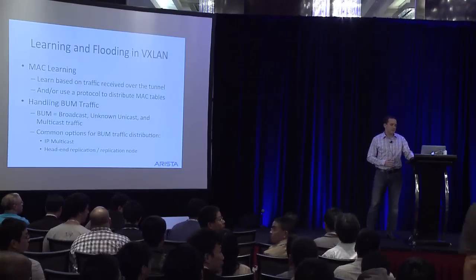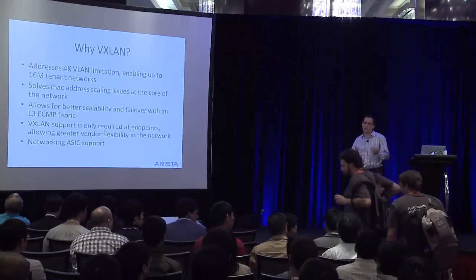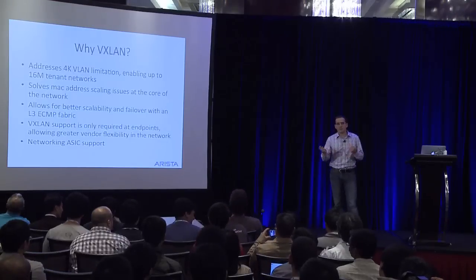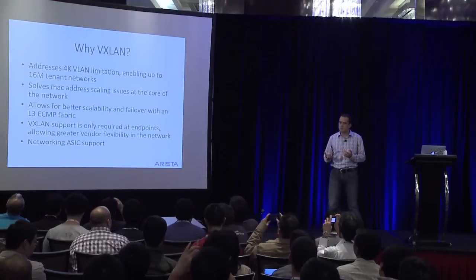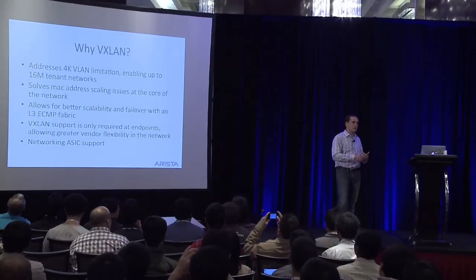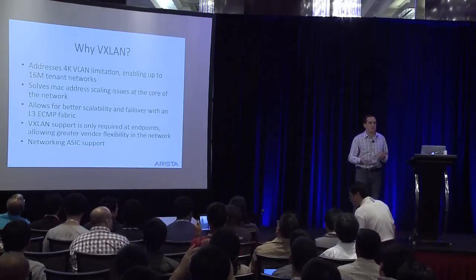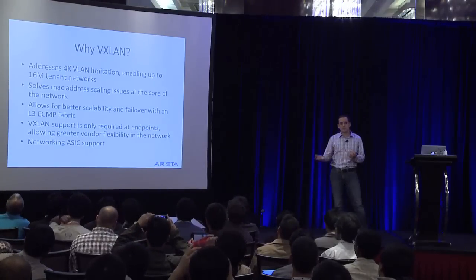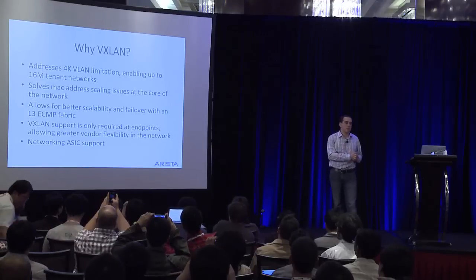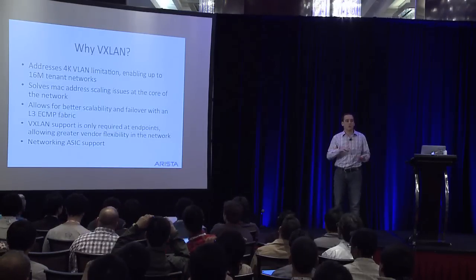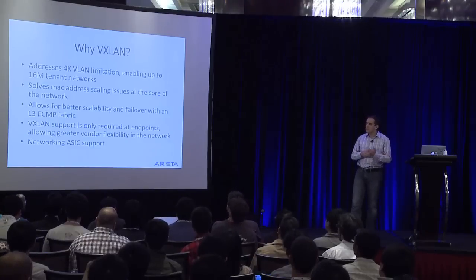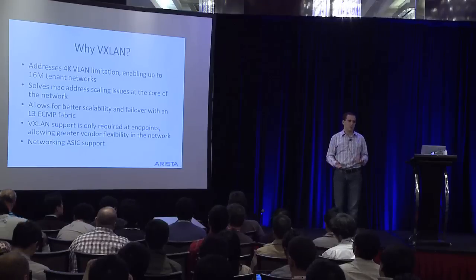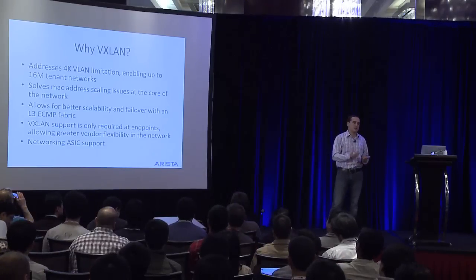The obvious question is: why do I care? Why would I want to run VXLAN on my network? There are a couple of different reasons. The most obvious one, interesting in the context of OpenStack if you're a service provider, is that you get past the limitation of 4,000 VLAN IDs for tenant networks. For VNIs, you can go up to 16 million IDs, which means you can handle more and more tenants. Even if you don't need 16 million different networks, VXLAN still has a lot of great benefits.